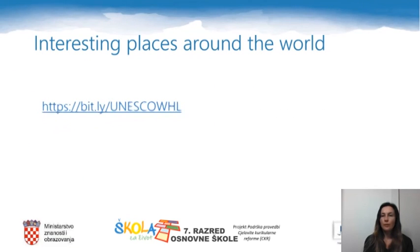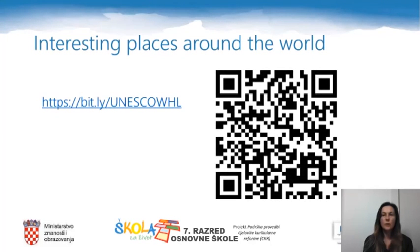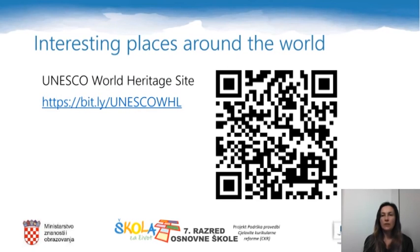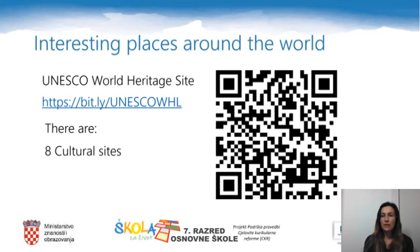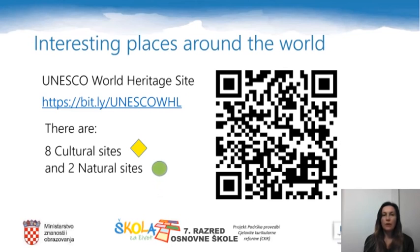If you copy the following link into your web browser or scan the QR code, you will be directed to UNESCO's World Heritage Site. There is a list of many interesting and beautiful places there. Croatia is also there with its eight cultural sites — indicated by a yellow symbol — and two natural sites, indicated by a green circle.